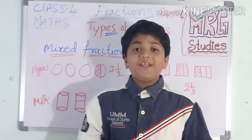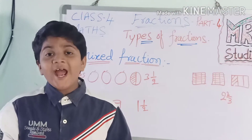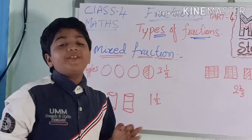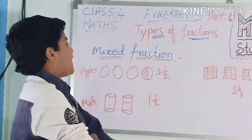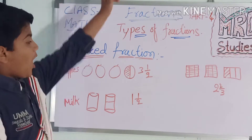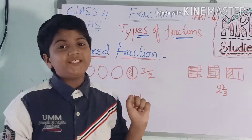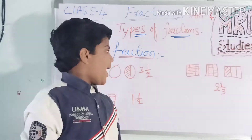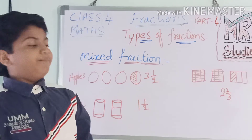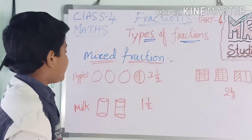Let me give real-life examples. One day my daddy brought four apples. I ate three apples completely, and from the fourth apple I ate only half. So that is three and one-half — that is a mixed fraction.